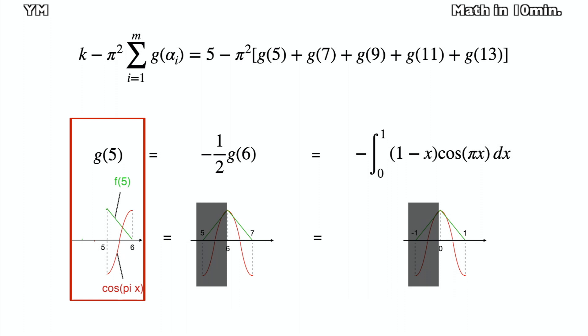g5 is equal to the integral of the multiple of these two graphs below. It is also equal to half of negative g6, because the red graph cosine pi x is shaped opposite against the left parts.